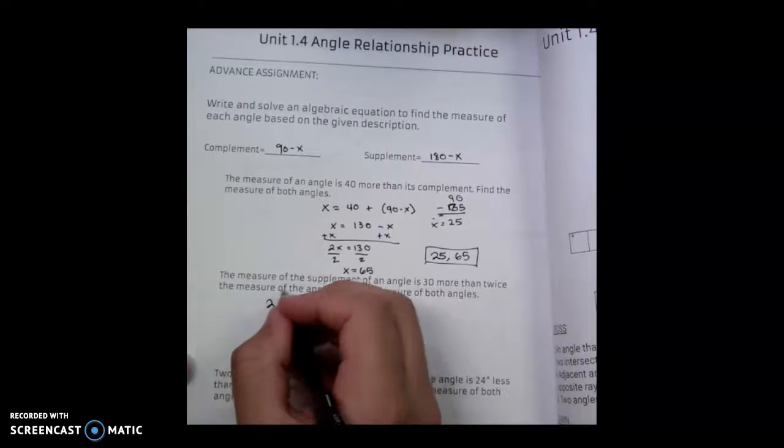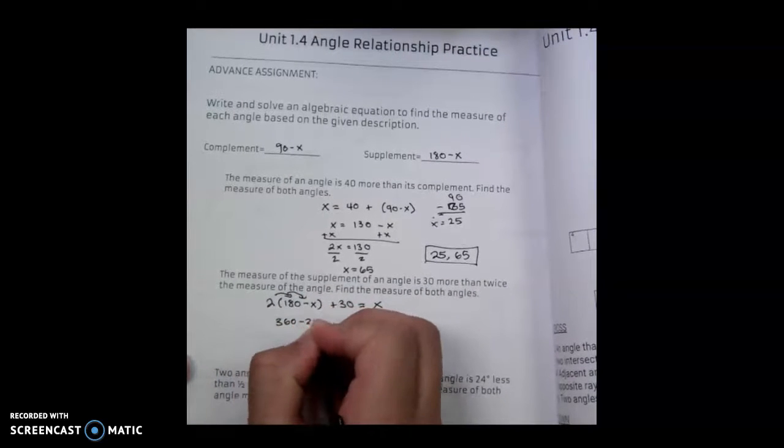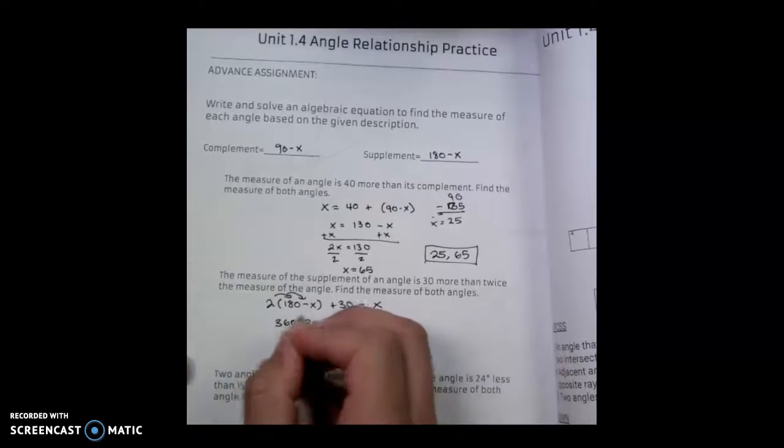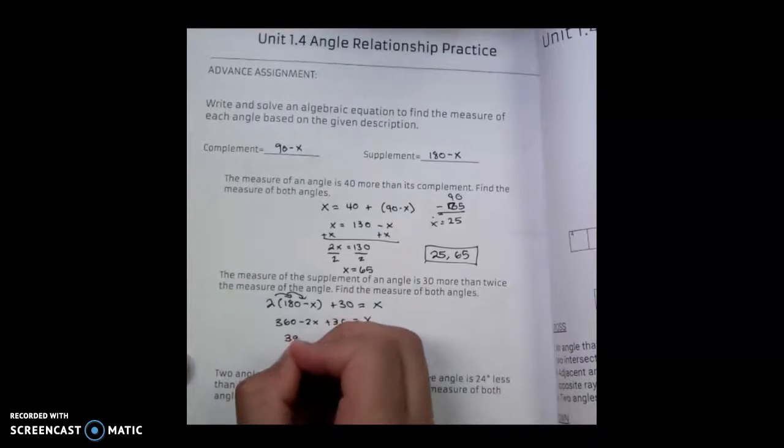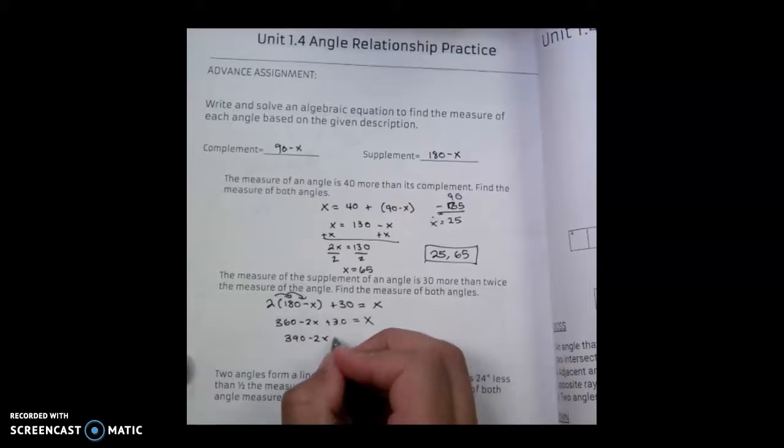So if I distribute my 2, I get 360 minus 2x plus 30 equals x. I combine like terms, and I get 390 minus 2x, because these two are combining, equals x.